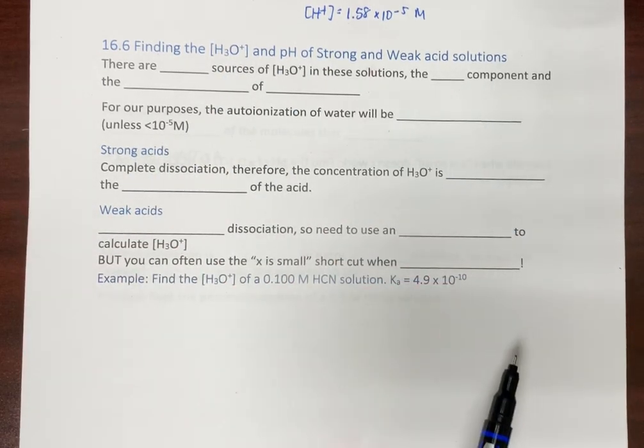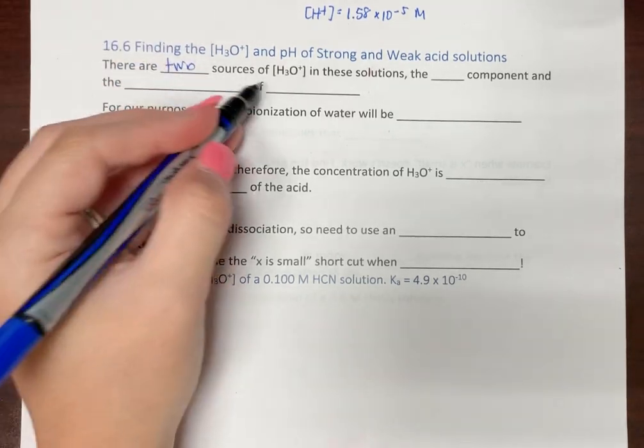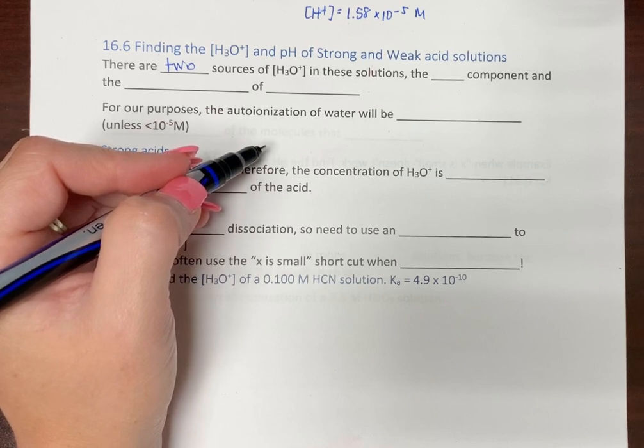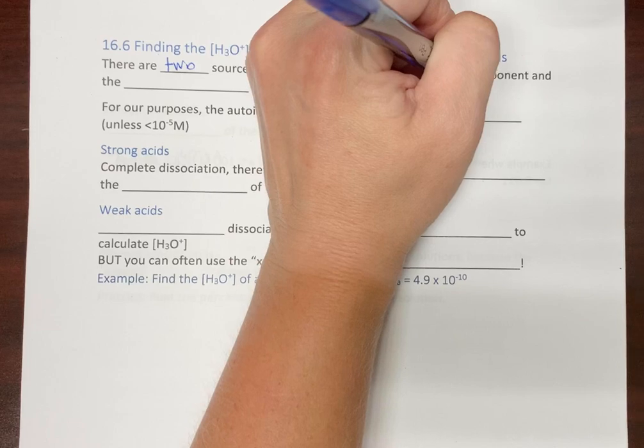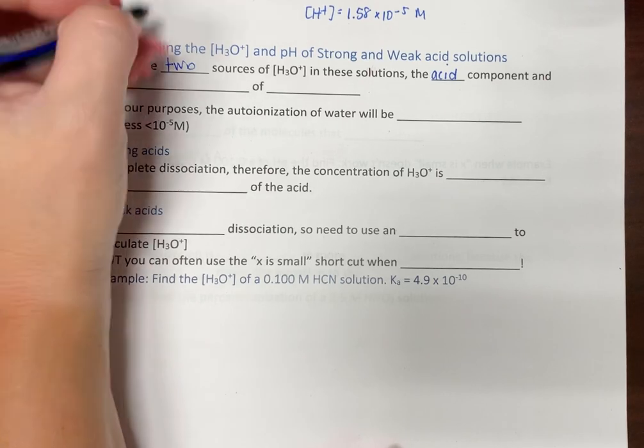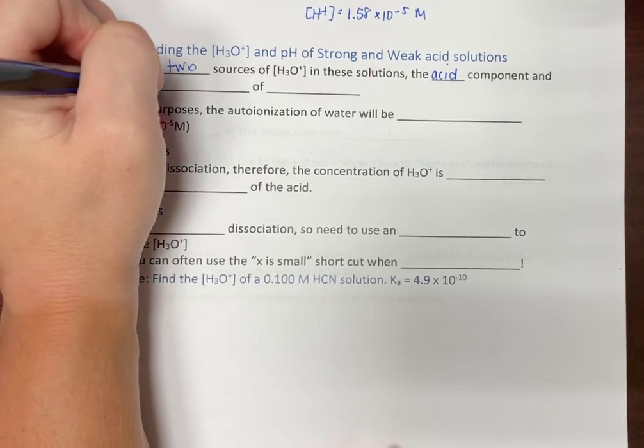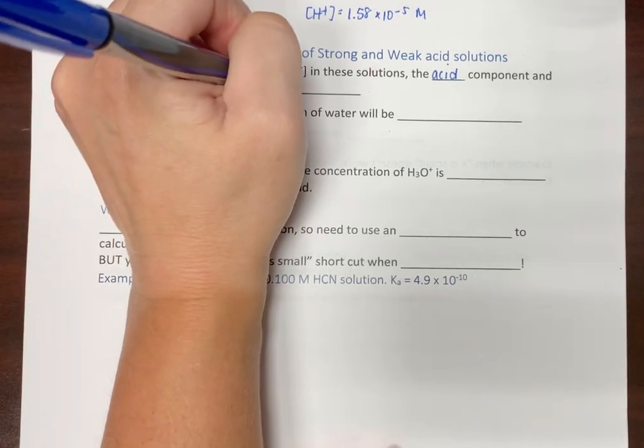You're going to actually have two sources of hydrogen ions in an aqueous solution. The first part is obvious. It's going to be the acid component because we're dealing with acids, right? Makes sense. There is also the auto ionization of water.